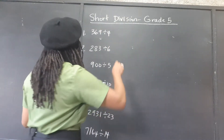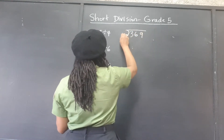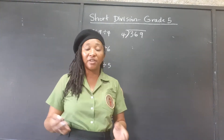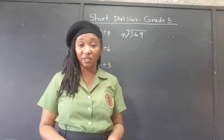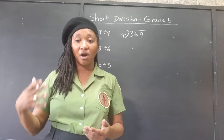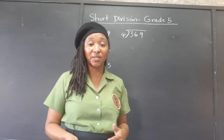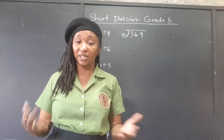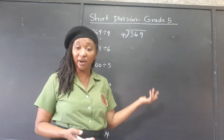We're going to be dividing 369 by 4. It's good when we're able to do different operations using different methods. Some persons prefer long division. I personally prefer long division because it shows you step by step all the different operations involved — division, a little bit of multiplication, a little bit of subtraction, and so on. But it's good when you're able to do short division as well.